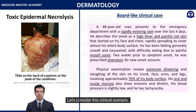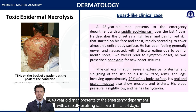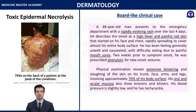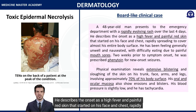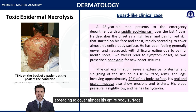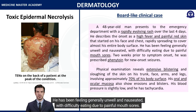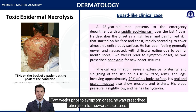Let's consider this clinical scenario. A 48-year-old man presents to the emergency department with a rapidly evolving rash over the last four days. He describes the onset as a high fever and painful red skin that started on his face and chest, rapidly spreading to cover almost his entire body surface. He has been feeling generally unwell and nauseated, with difficulty eating due to painful mouth sores. Two weeks prior to symptom onset, he was prescribed phenytoin for new-onset seizures.